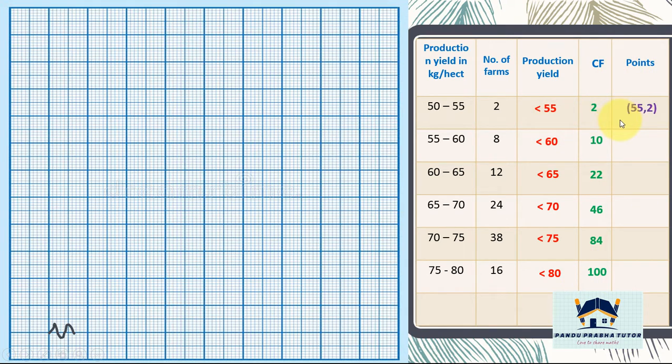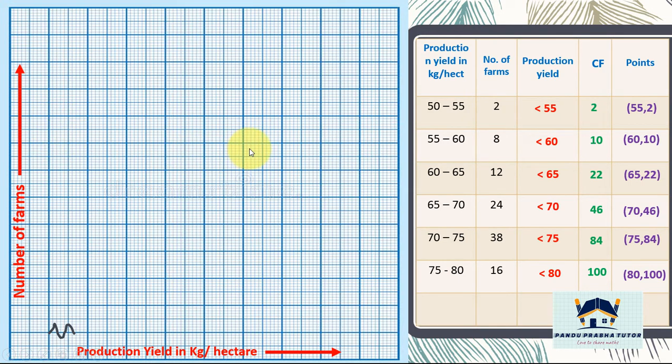Now we have to list the points. First point is 55 comma 2. 60 comma 10. 65 comma 22. 70 comma 46. 75 comma 84. 80 comma 100. In x-axis we have to take production yield in kg per hectare. In y-axis, number of farms.